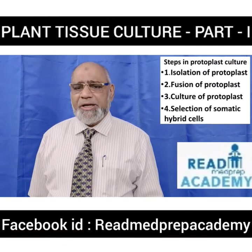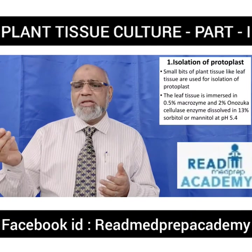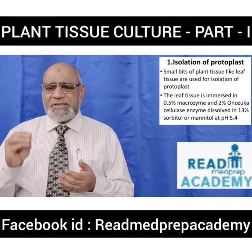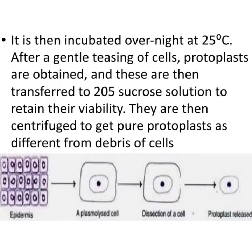For isolation of protoplasts, small bits of plant tissue such as leaf or mesophyll tissue are used. The leaf tissues are immersed in 0.5% macrozyme and 2% Onozuka cellulase enzyme dissolved in 13% sorbitol or mannitol at pH 5.4, then incubated overnight at 25°C. After gentle teasing, protoplasts are obtained and transferred to 20% sucrose solution to retain viability. They are often centrifuged to obtain pure protoplasts, separated from cell debris. In the image, epidermal cells are dissected, the cell wall is destroyed, and a protoplast with cell membrane is formed.